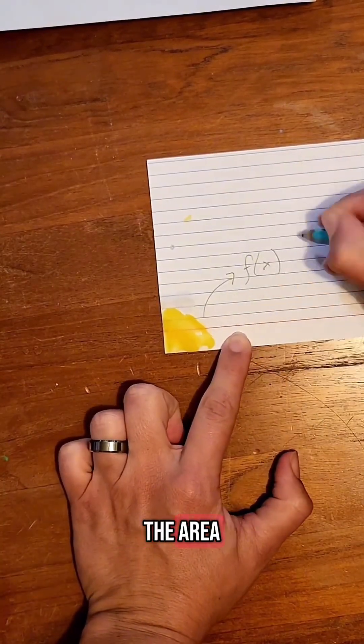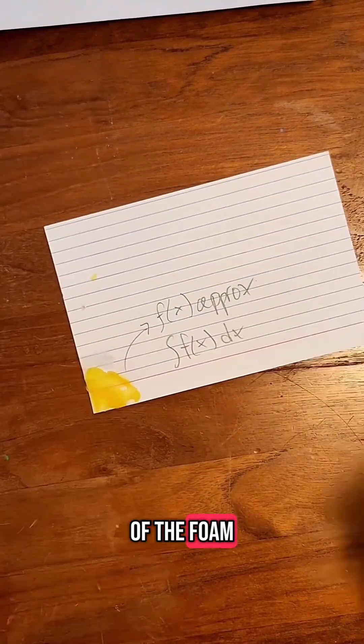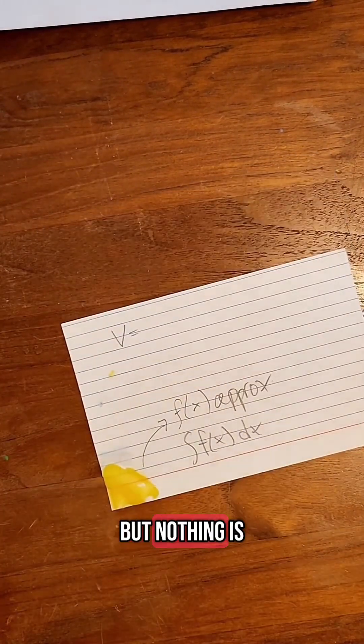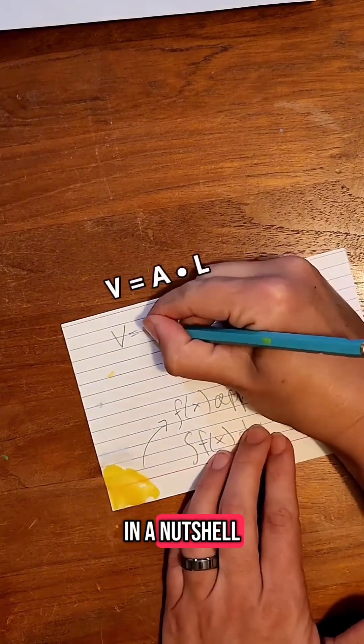He integrated the function to get the area, and that times the length was the total volume of the foam. It wasn't perfect, but nothing is, and that's engineering in a nutshell.